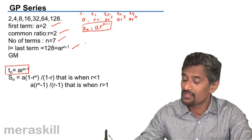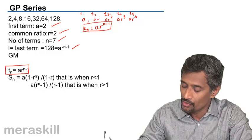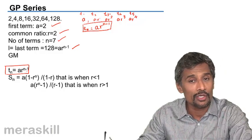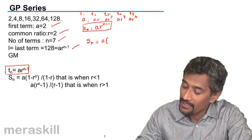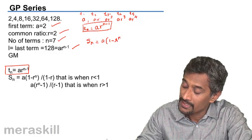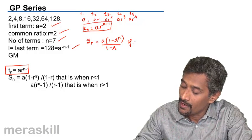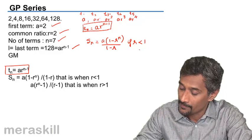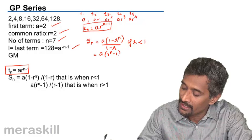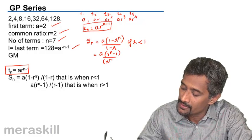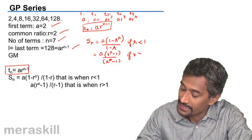Just as in arithmetic progression, we have sum of terms in geometric progression, which is SN. It equals A into (1 minus R raised to N) upon (1 minus R) if R is less than 1, and A into (R raised to N minus 1) upon (R minus 1) if R is greater than 1.